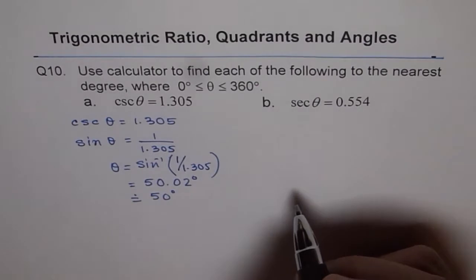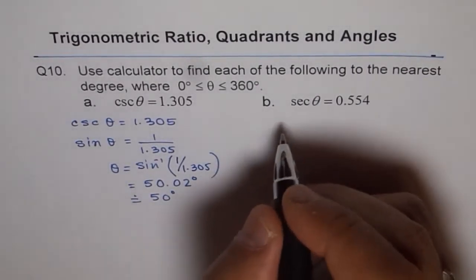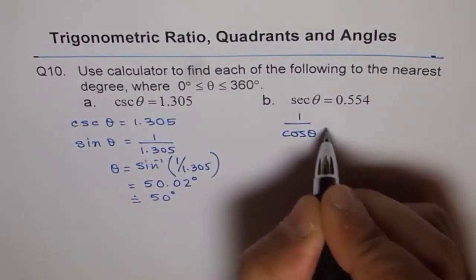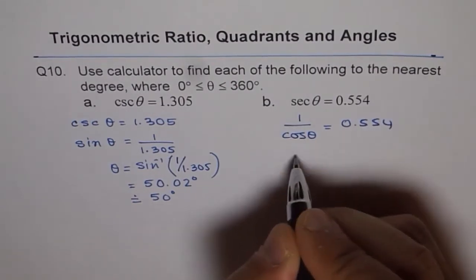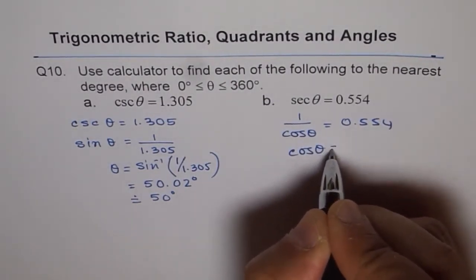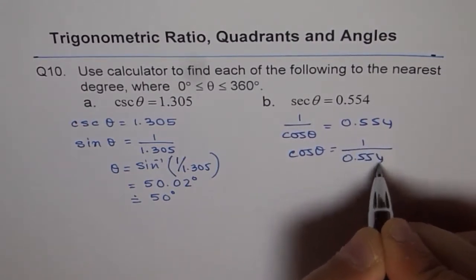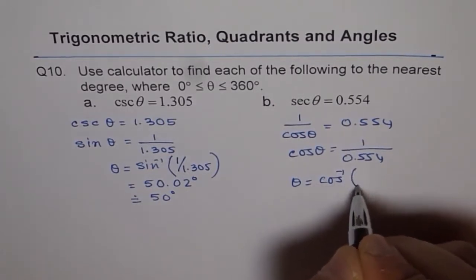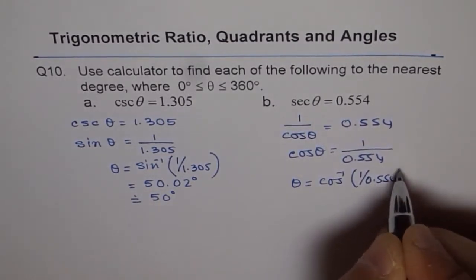Now, let's do the next one. Secant is reciprocal of cosine. So you could also write like this. You could write first like 1 over cosine theta equals 0.554 and then cosine theta equals 1 over 0.554 and then theta equals cosine inverse of 1 divided by 0.554, correct?